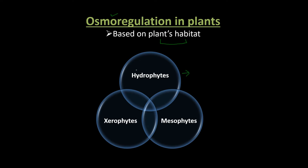Hydrophytes are plants that have an excessive amount of water available. Mesophytes live in a terrestrial environment.